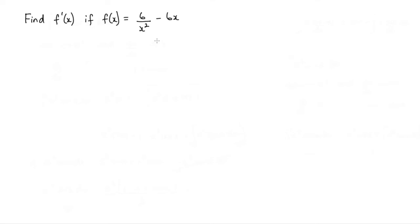Now the first thing I'm going to do here is to rewrite f of x, and in particular this term here. So f of x we can rewrite as 6x to the negative 2 minus 6x.